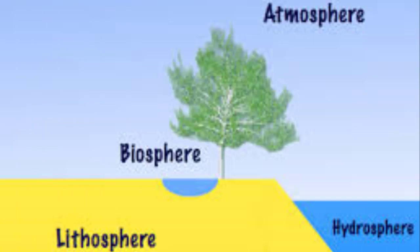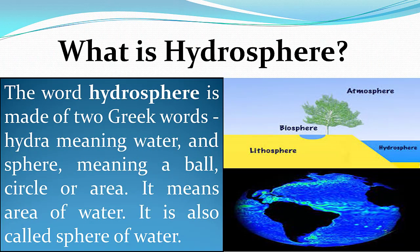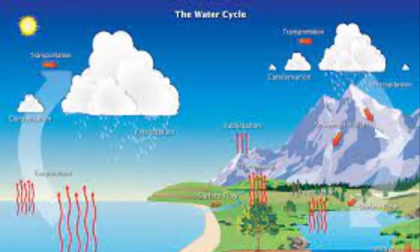Our water sphere is called hydrosphere. The word hydrosphere is made of two Greek words: 'hydra' meaning water, and 'sphere' meaning a ball, circle, or area. It means area of water and is also called sphere of water. About 71 percent of the Earth's surface is comprised of water in different shapes — oceans, rivers, and lakes — this is called hydrosphere.